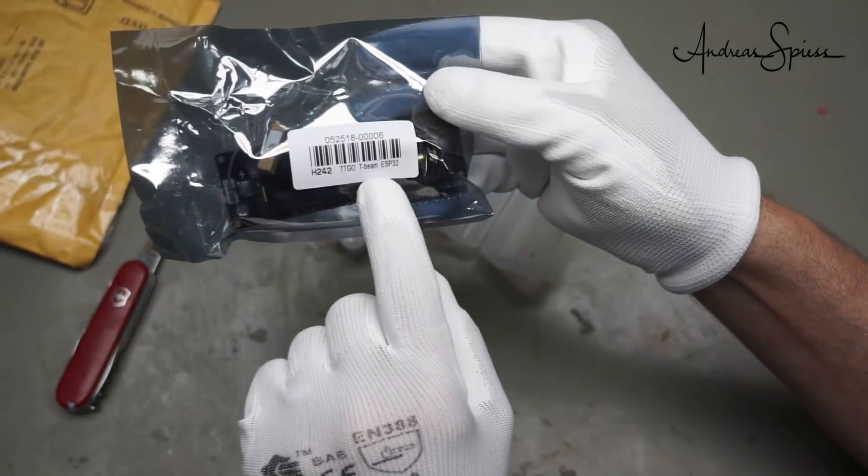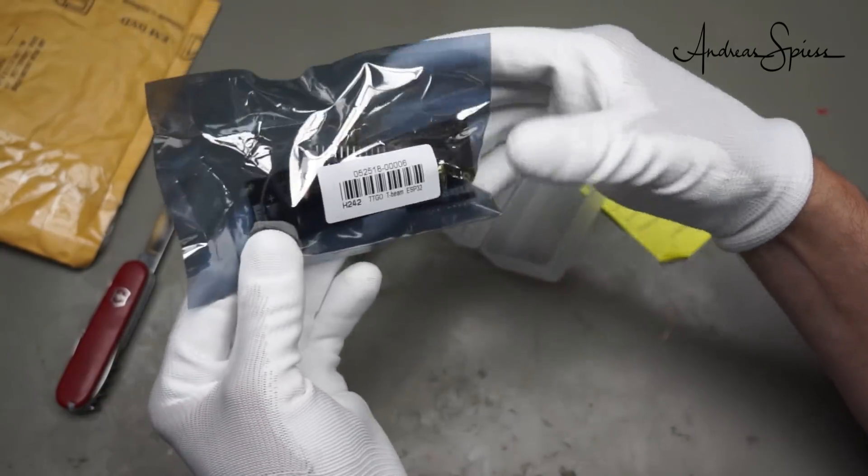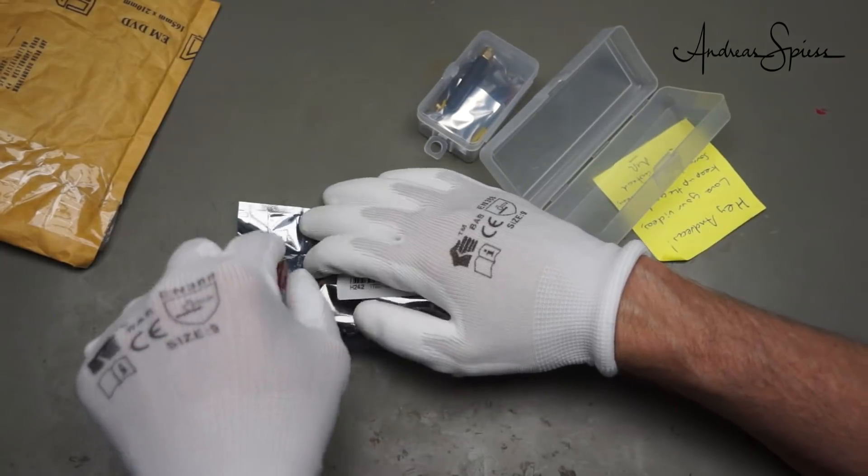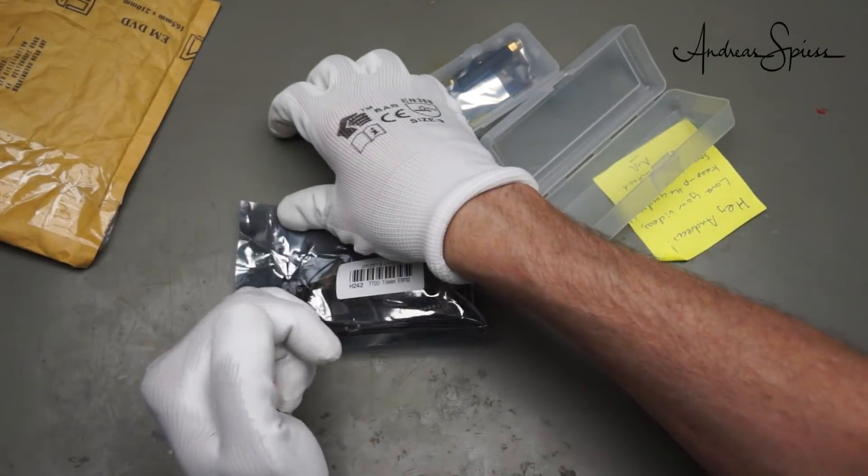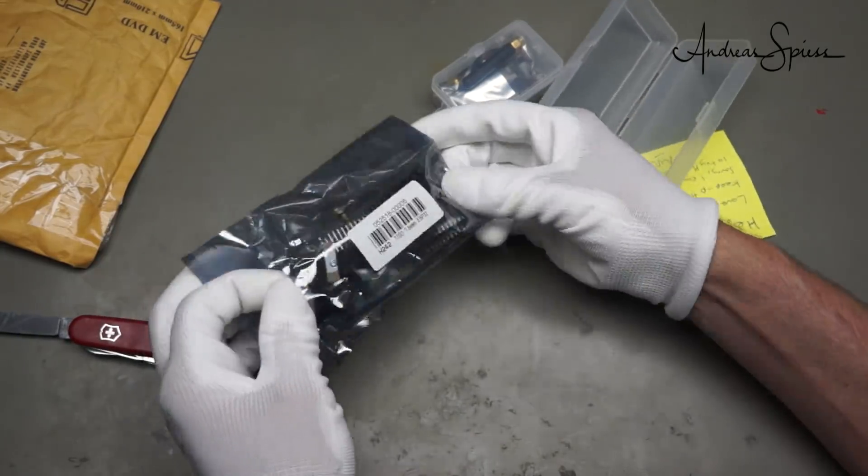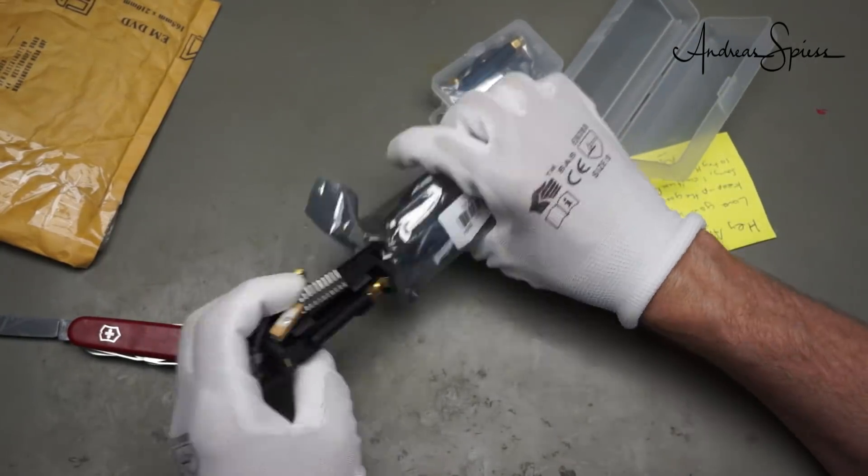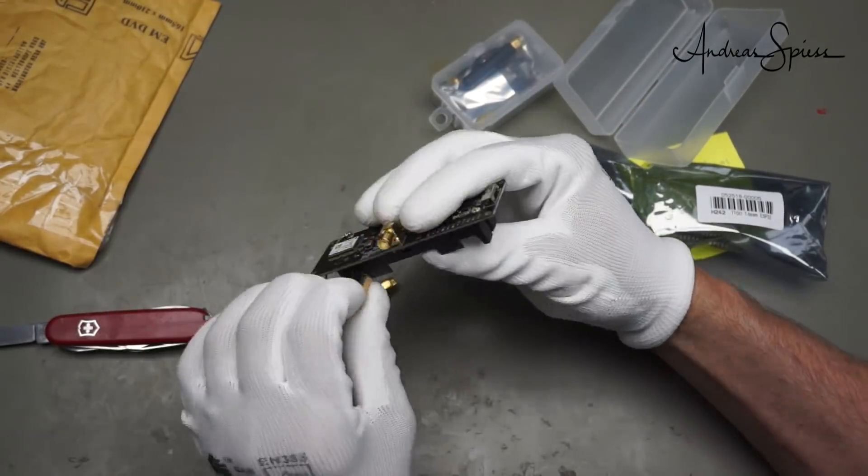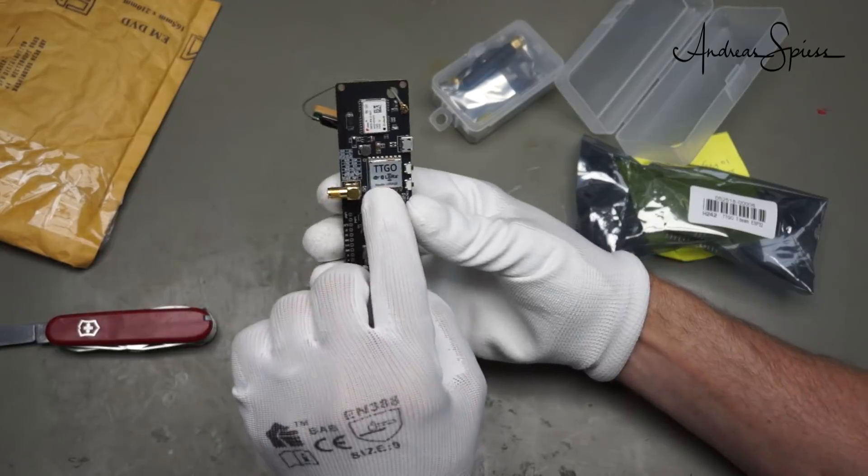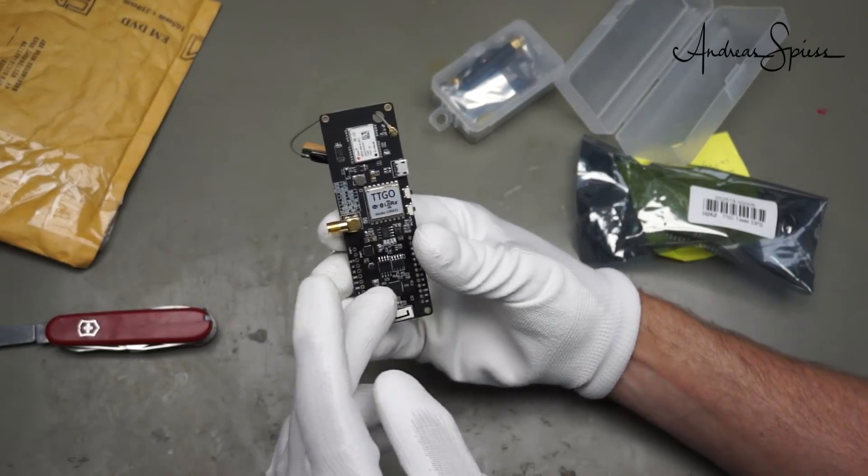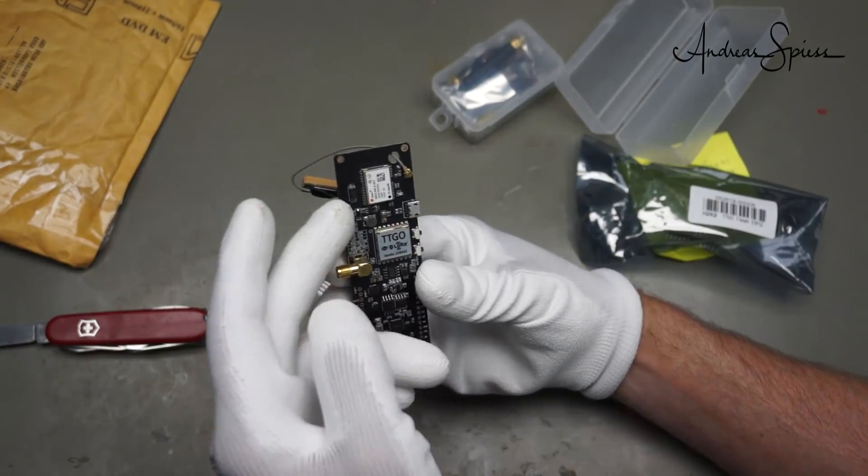A TTGO T-Beam ESP32. I do not know exactly what this is. I do not think I have one in my collection. Oh it has an antenna and a GPS antenna I assume.